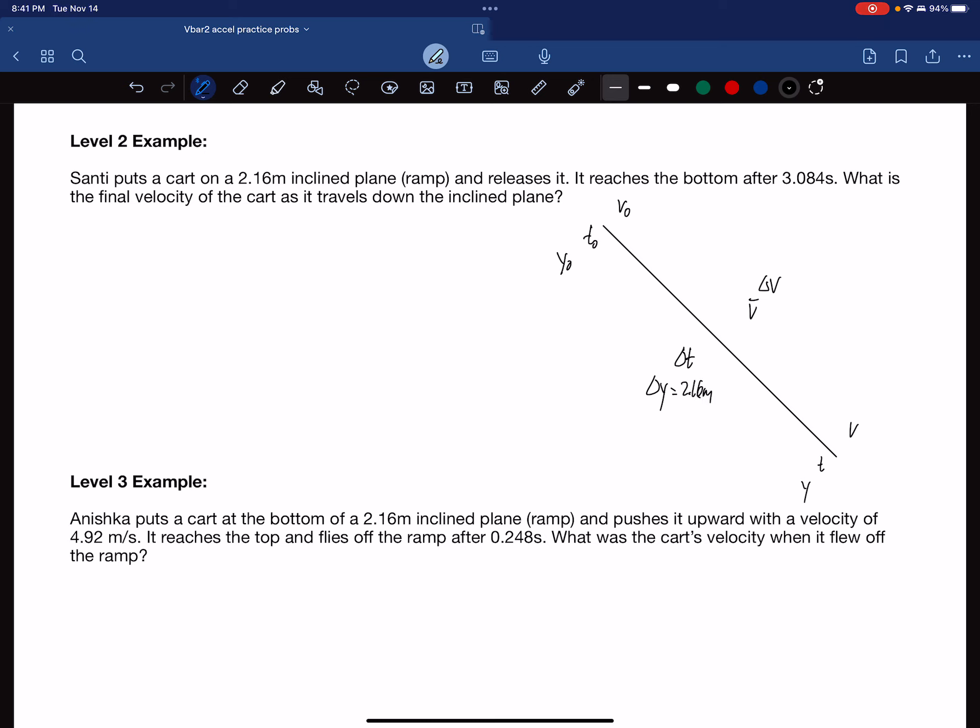And he releases it. He releases it from the top. That means that the velocity was zero meters per second in the beginning. And it reaches the bottom after 3.084 seconds. That's the time interval, 3.084 seconds. And we want to know the final velocity of the cart as it travels down the inclined plane.